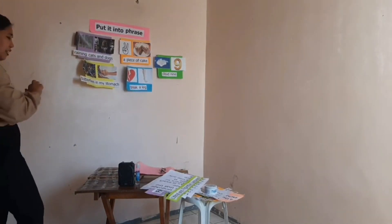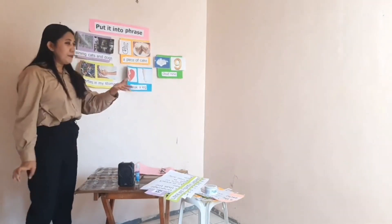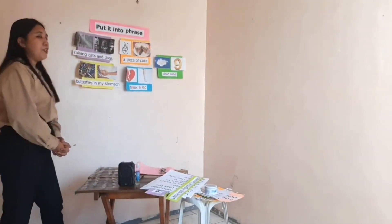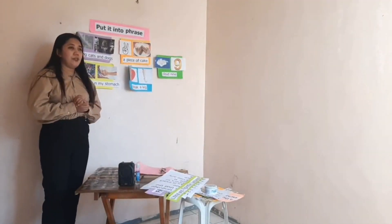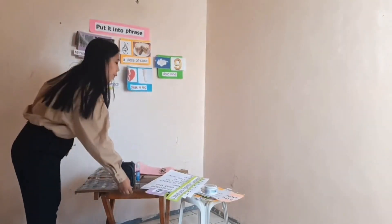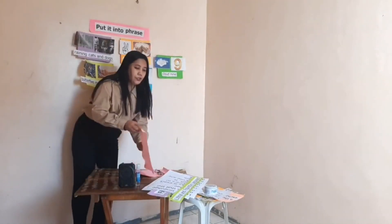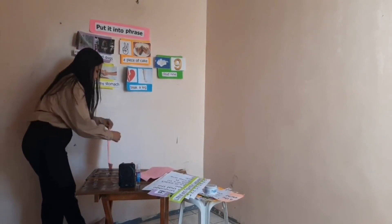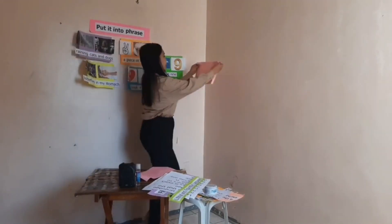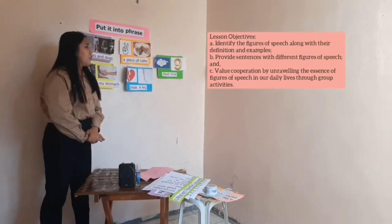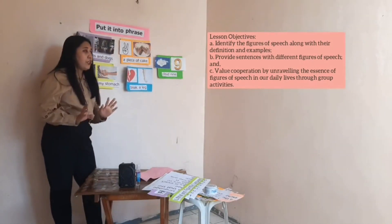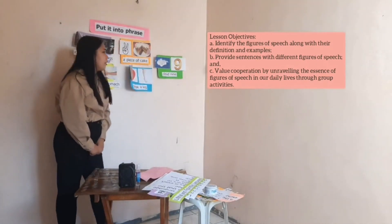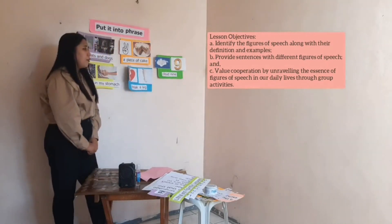So what do you think is our lesson for today? It has something to do with language. We have literal and figurative language — those are just some examples of figurative language. So today we will be talking about figurative and literal language. Before we formally start, let us go over the lesson objectives. Number one: identify the figures of speech along with their definition and examples. Number two: provide sentences with different figures of speech. And lastly: value cooperation by understanding the essence of figures of speech in our daily lives through group activities.